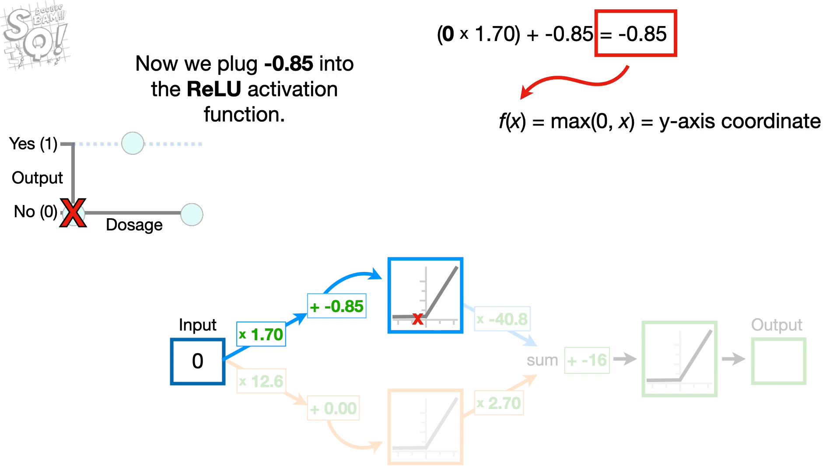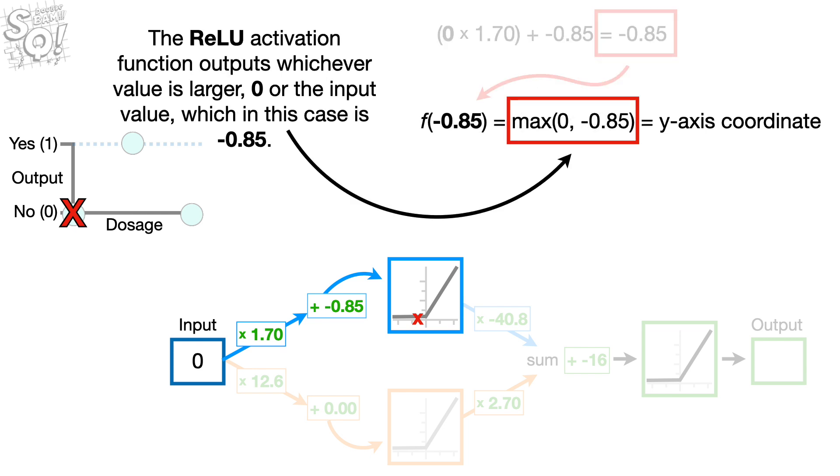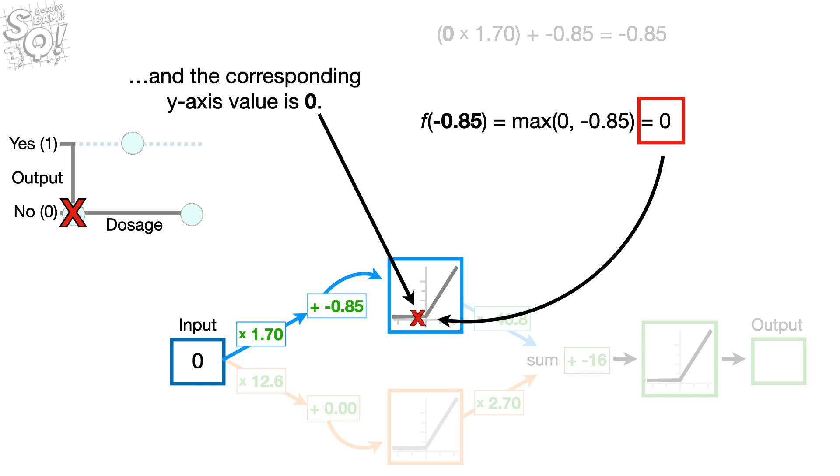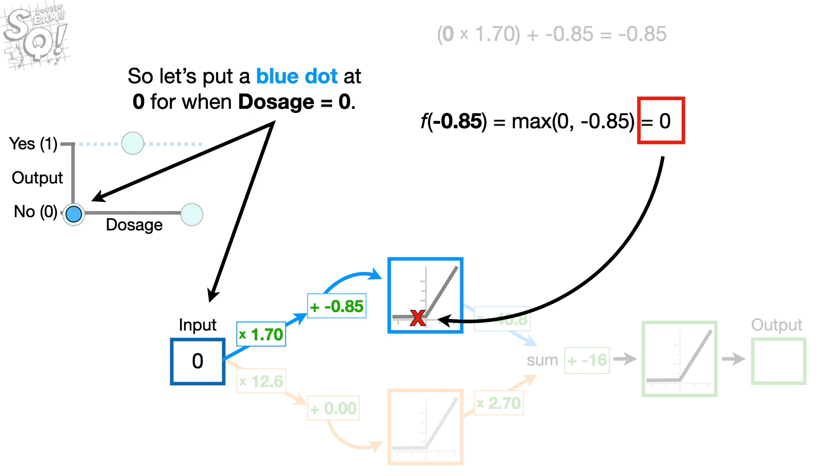Now we plug negative 0.85 into the ReLU activation function. The ReLU activation function outputs whichever value is larger, 0, or the input value, which in this case is negative 0.85. And because 0 is greater than negative 0.85, the output from the ReLU activation function is 0. And the corresponding y-axis value is 0. So, let's put a blue dot at 0 for when dosage equals 0.